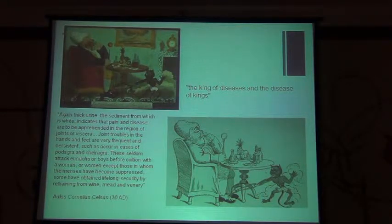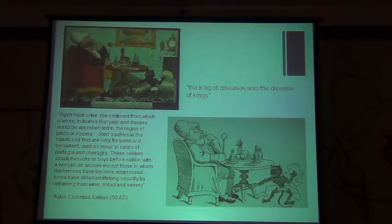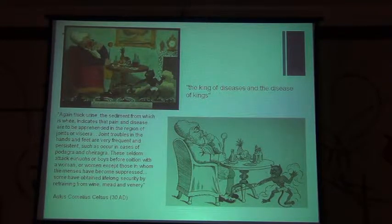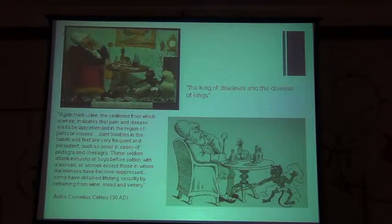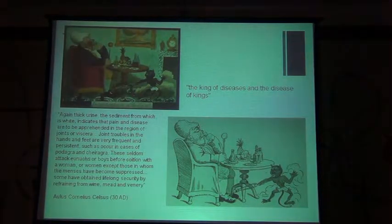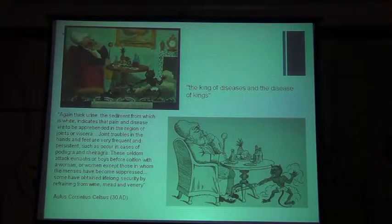Let me read it out for you: 'Thick urine, the sediment from which is white, indicates that pain and disease are to be apprehended in the region of joints or viscera. Joint troubles in the hands and feet are very frequent and persistent, such as occur in podagra and chiragra. These seldom attack eunuchs or boys before coition with a woman, or women except those in whom the menses have become suppressed. Some have obtained lifelong security by abstaining from wine, mead, and venery.' Very aptly described back in 30 AD.